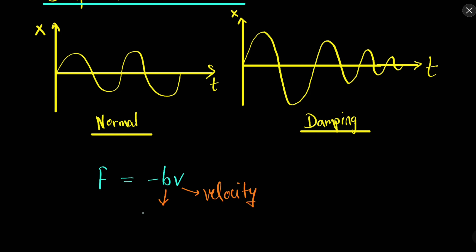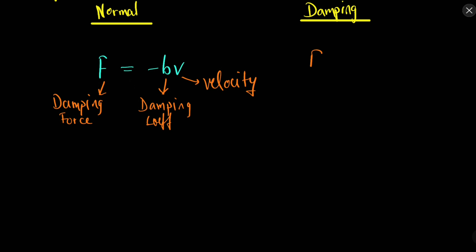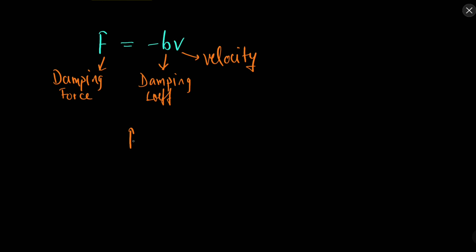B is the damping coefficient, which tells us about the amount of damping something can offer — this is the damping force. For example, a simple pendulum will eventually stop because of air resistance. More velocity means more air friction, so the force is proportional to velocity. The resultant force equation becomes M·dV/dt = −KX − BV, or in terms of X: M·d²X/dt² + B·dX/dt + KX = 0. This is a differential equation.